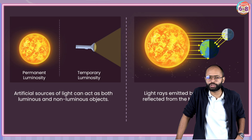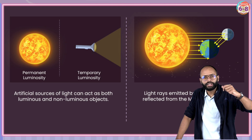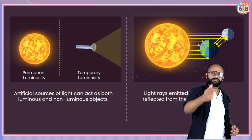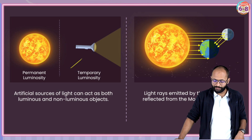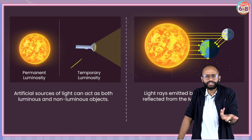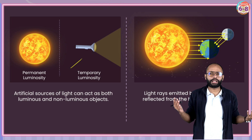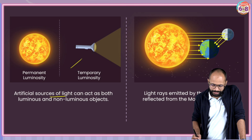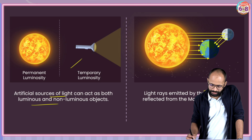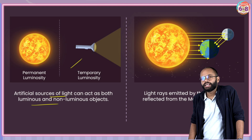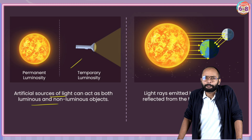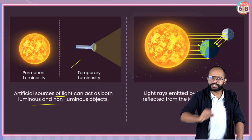There are luminous objects which are permanently luminous - like the sun, you cannot turn them off. Then we have temporary luminosity - things which you can turn on and off, like your torch or candles. Things which glow around you that you have control over are temporarily luminous. Light rays emitted by the sun get reflected from the moon's surface. Moon does not have its own light - moon is a non-luminous object. It reflects the light coming from the sun. This is a very commonly asked question.